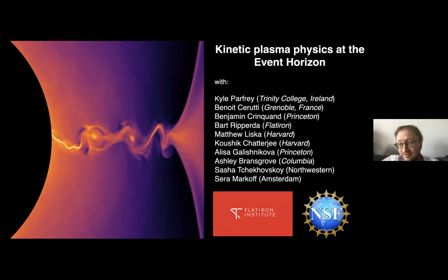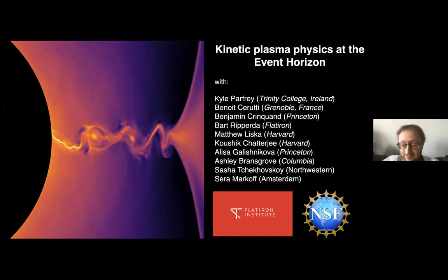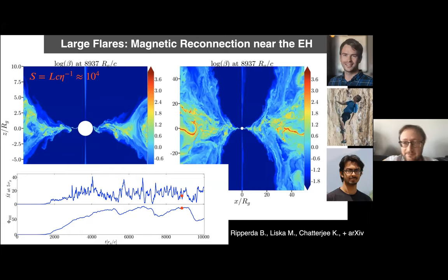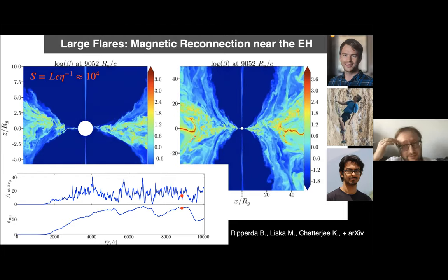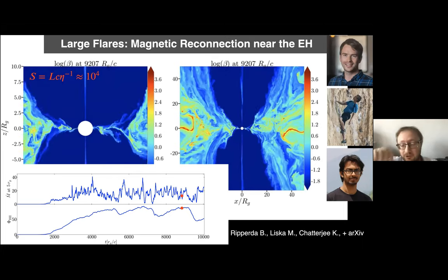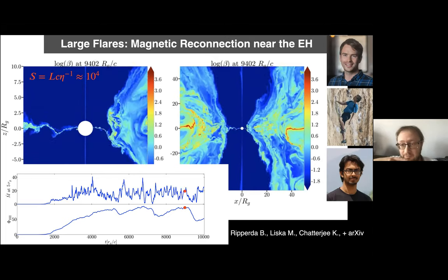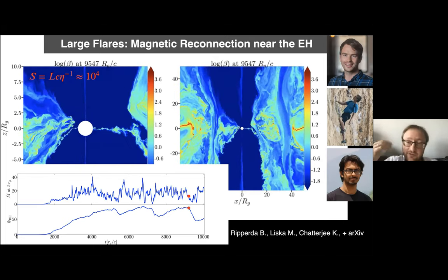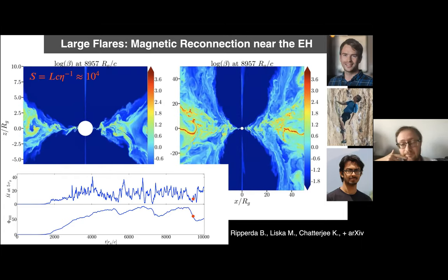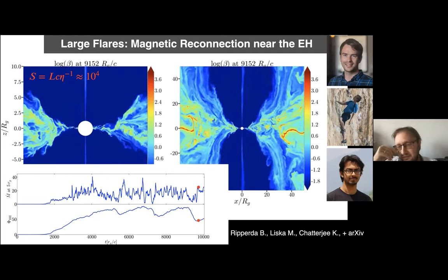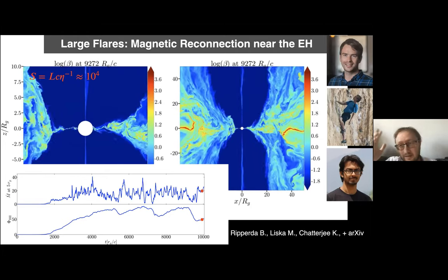I'll give you a brief update since I gave a talk half a year ago. This is an attempt to understand which kinetic plasma physics is important in the accretion flows and how this can affect dynamical observables. I'm showing this large GRMHD simulation that our team, led by Bart, Matthew, and Kushik, ran on Summit. This is the largest magnetically arrested simulation ever. It shows large events of eruption of the magnetic flux from the black hole horizon, accompanied by formation of large-scale current sheets, which can power multi-wavelength flares and affect the dynamics of accretion on long timescales.